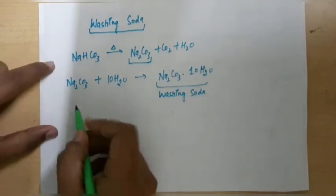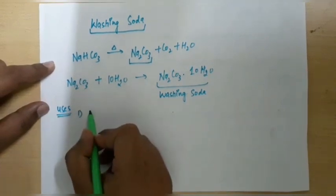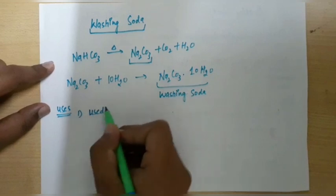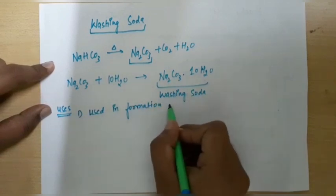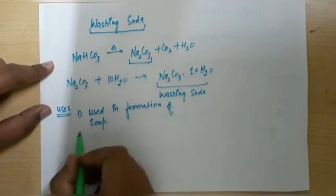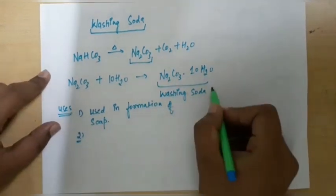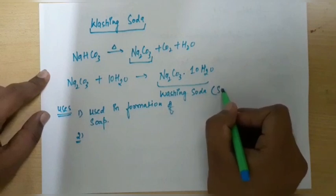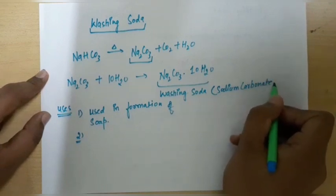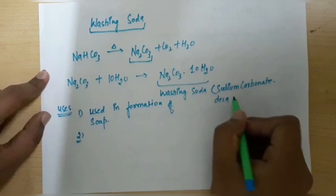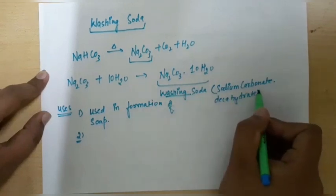Now let us discuss some uses. The very first one is it is used in formation of soap. Here we have to note one important point, it is also called sodium carbonate dot decahydrate. This washing soda is its common name and this is its chemical name.